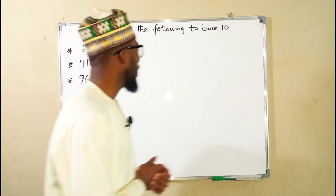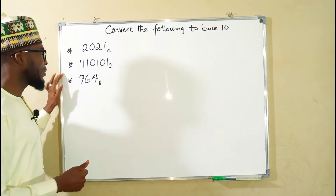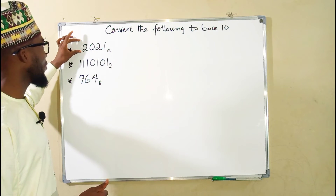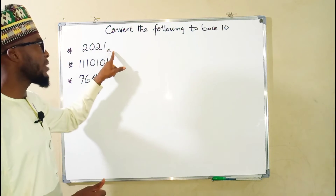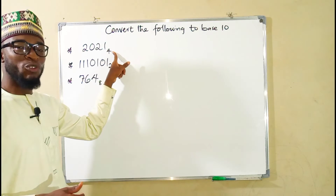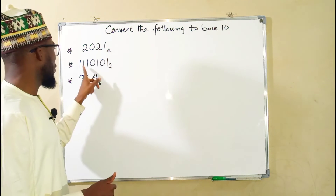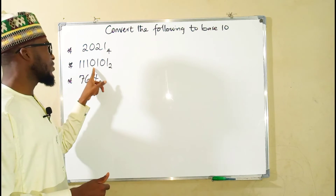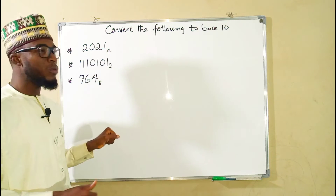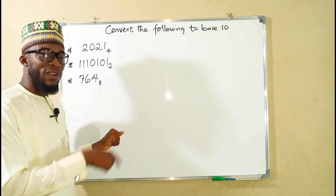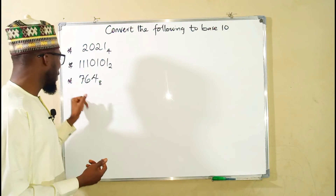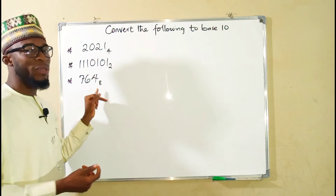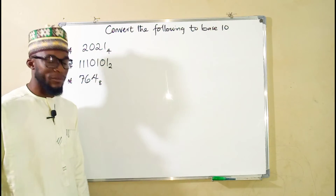So this is what we have for today. We have three problems. The first number is 2021 in base 4, and we want to convert it to base 10. We also have 1110101 in base 2, which we are going to convert to base 10 as well. And lastly, we have 764 in base 8 to convert to base 10.